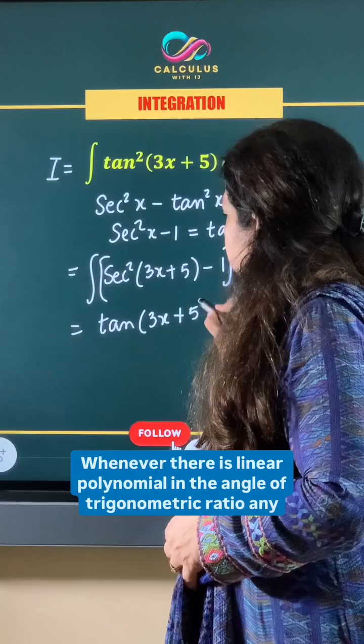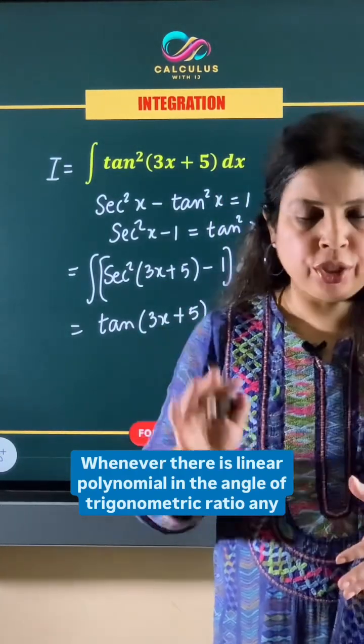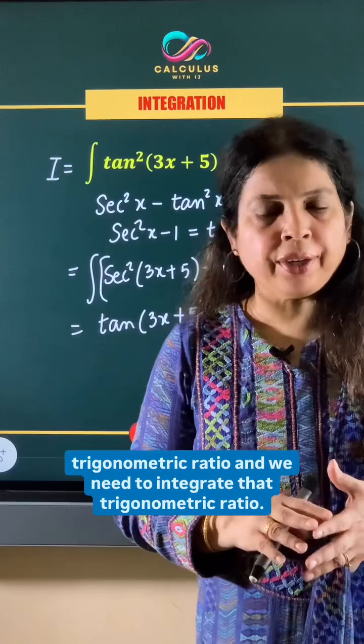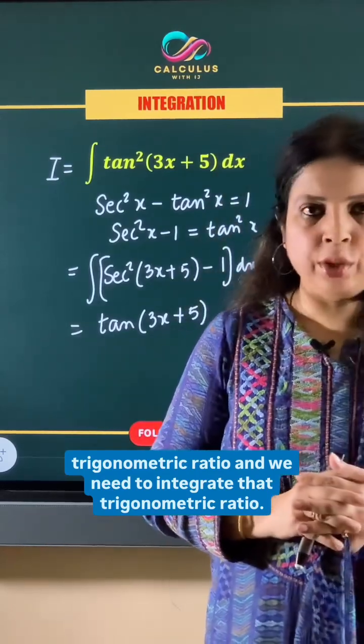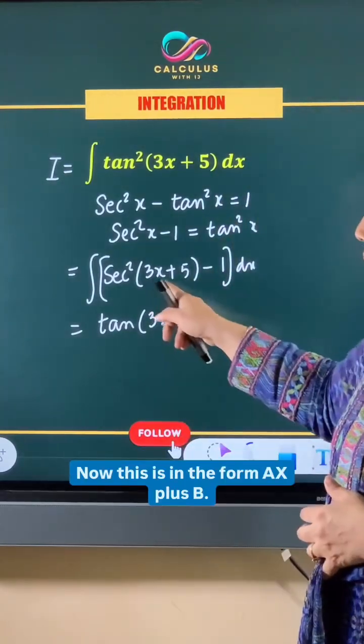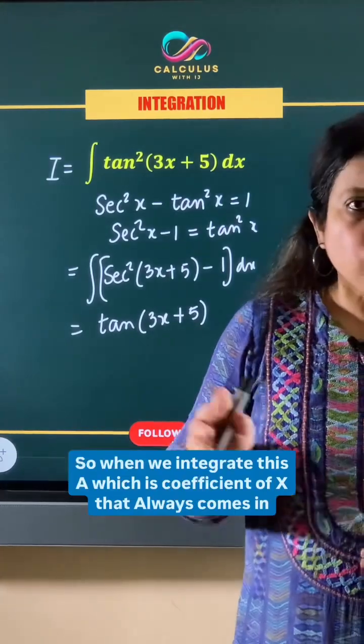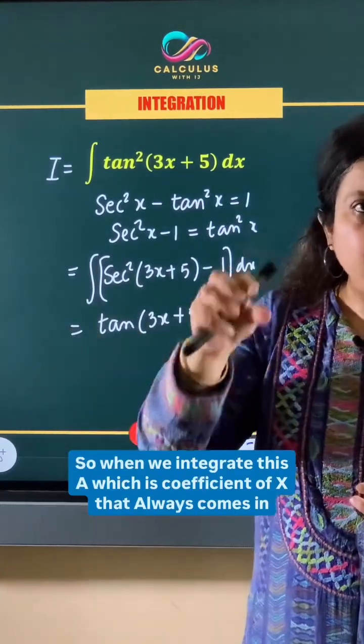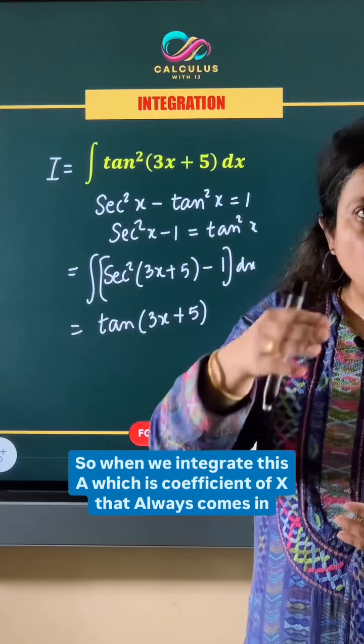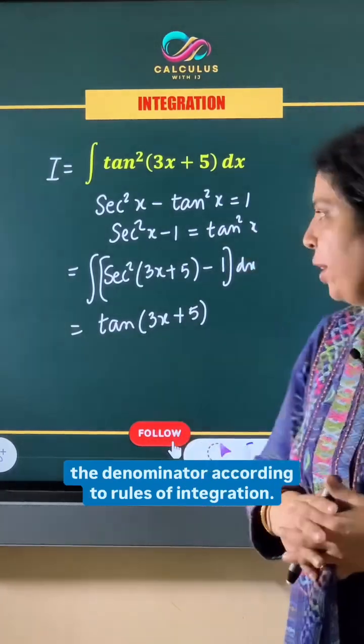Whenever there is a linear polynomial in the angle of a trigonometric ratio and we need to integrate that trigonometric ratio, this is in the form ax+b. So when we integrate this, a which is the coefficient of x always comes in the denominator according to rules of integration.